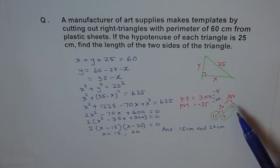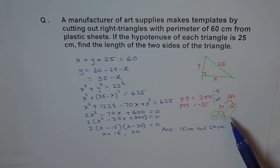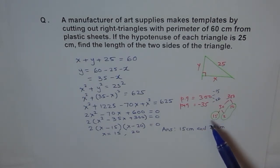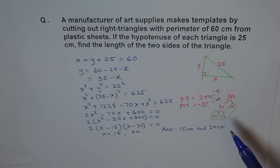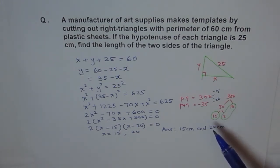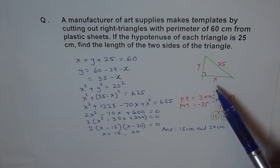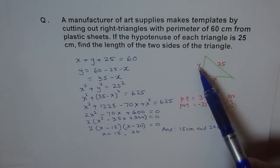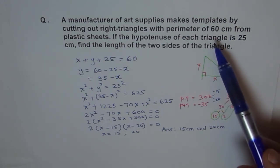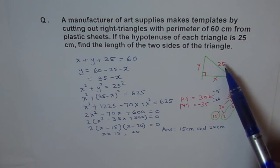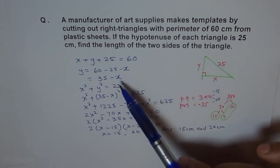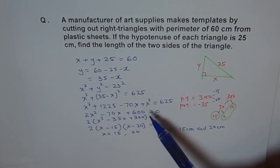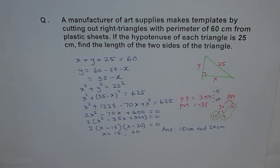Remember this technique of factoring — it's very important. Or if you want, you can use the quadratic formula to immediately get the two roots, though more calculations are involved. We had two variables: one relation came from the perimeter given as 60, so we added x, y, and 25 to get 60. The other was the Pythagorean theorem: x squared plus y squared equals 25 squared. We substituted y in terms of x and solved the equation to get 15 cm and 20 cm. So the triangle is 15 by 20 by 25.